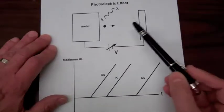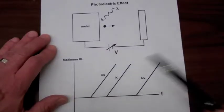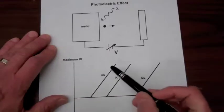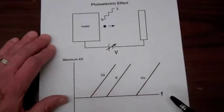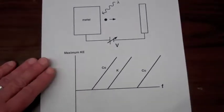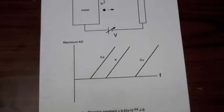In other words, the maximum kinetic energy of the electrons coming off the metal increased linearly with the frequency of the light. And the slope of that maximum kinetic energy versus frequency was called Planck's constant and has a value of 6.63 times 10 to the minus 34 joule seconds.